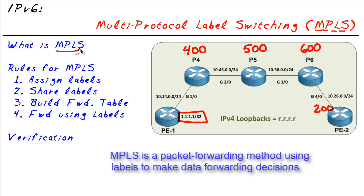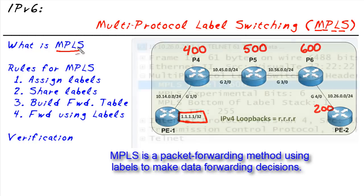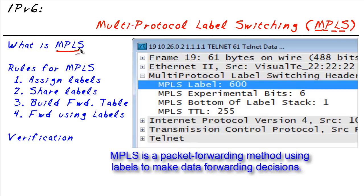MPLS is nothing more than a packet forwarding technology that, instead of using IP addresses and Layer 3 information to make forwarding decisions, uses something called a label that is attached to every single packet. Label forwarding based on a label instead of the IP address took a lot less resources back in the old days, and that's why we used it — it was faster. Today, we don't get that much of a speed improvement by forwarding based on a label versus the actual IP packet header information.